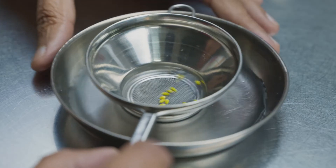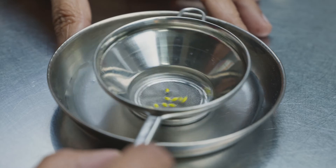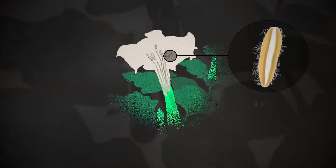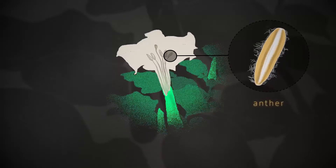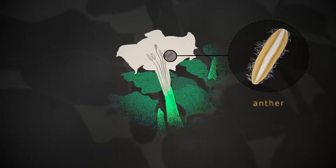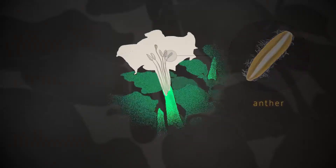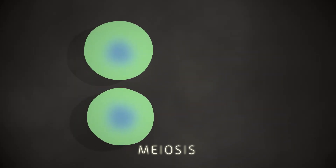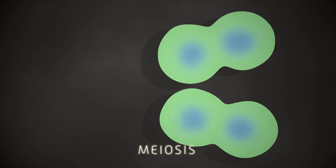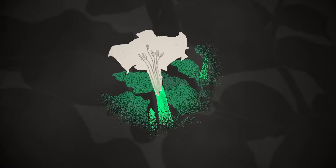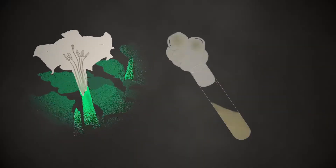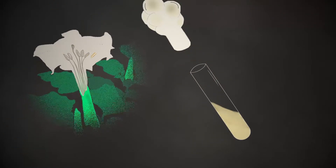Pollen grains, also called microspores, are the male sex cells of a plant found inside the anthers, and anthers are the male reproductive part of the plant. These cells go through a special kind of reproduction called meiosis, where each cell divides twice to produce four cells. She was trying to understand the biochemistry of meiosis, something that wasn't well known at the time.